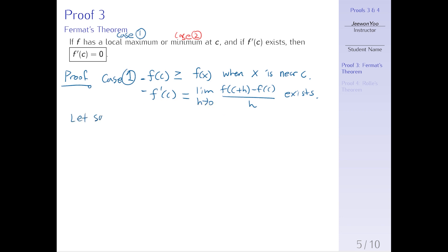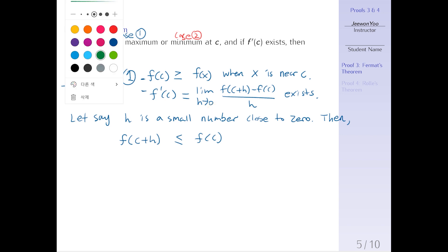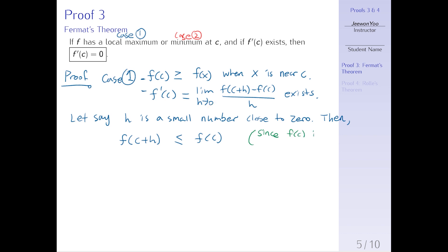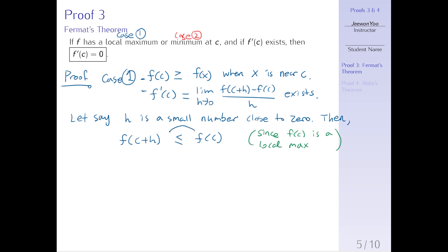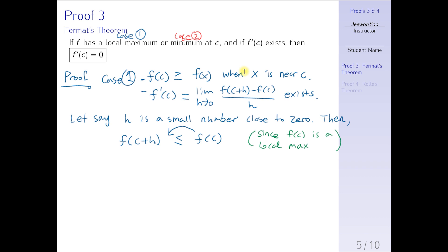Because f(c) is the local maximum, the y values nearby f(c) — which is f(c+h) — must be less than or equal to f(c), since f(c) is a local maximum. Moving f(c) to the other side, we get f(c+h) minus f(c) is less than or equal to 0.